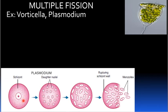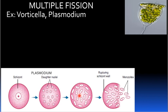The parent cell and its nucleus divide repeatedly without the division of the cytoplasm. Later, the cytoplasm divides into many parts around each nucleus. Each cytoplasmic part encircles a daughter nucleus.